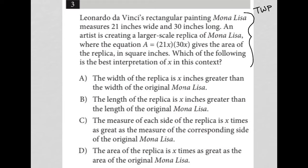The first sentence says Leonardo da Vinci's rectangular painting, Mona Lisa, measures 21 inches wide and 30 inches long. I'm actually going to just draw the rectangle. So 21 is wide and 30 is the length.